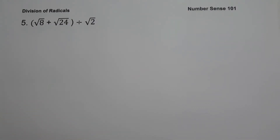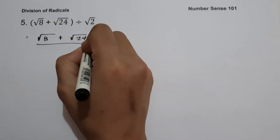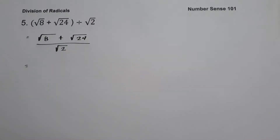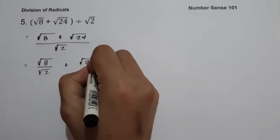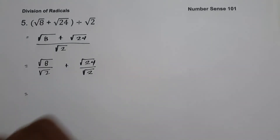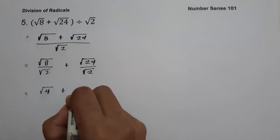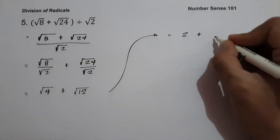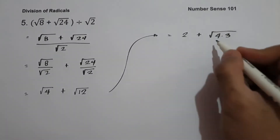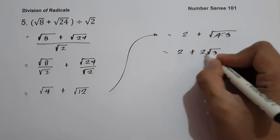On example number five, we have the quantity square root of 8 plus square root of 24, all divided by square root of 2. Let us write in fraction form: square root of 8 plus square root of 24, all over square root of 2. We split this as square root of 8 over square root of 2, plus square root of 24 over square root of 2. Square root of 8 divided by square root of 2 is square root of 4, and square root of 24 divided by square root of 2 is square root of 12. Square root of 4 is 2, and the factors of 12 include 4 times 3 where 4 is a perfect square. So the answer is 2 plus square root of 4 times square root of 3, which is 2 plus 2 square root of 3.